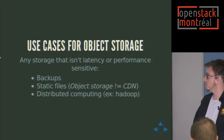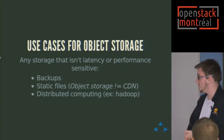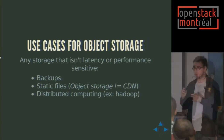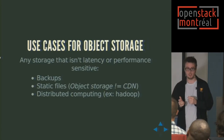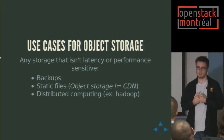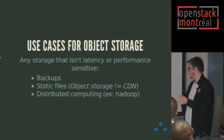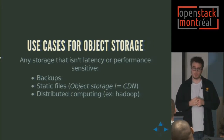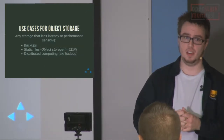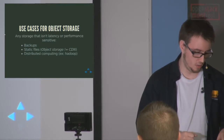Use cases for object storage: any storage that isn't latency or performance sensitive. It's really good for archival backups and static files. Object storage is not a CDN or content delivery network — you'll have content delivery networks fetching files from object storage, but you usually don't want to serve your static content directly off of an object storage solution. There's also distributed computing — in OpenStack there's the Sahara project that works with Hadoop, and it's starting to be a trend with big data.